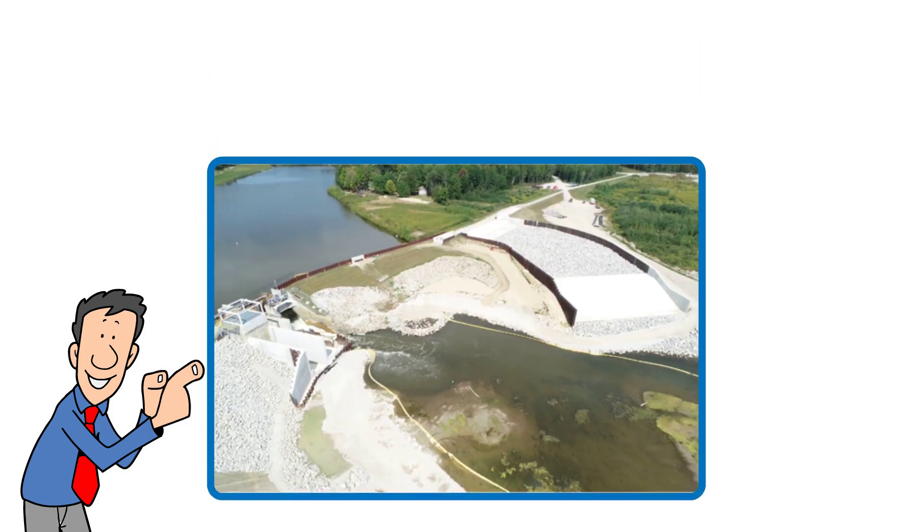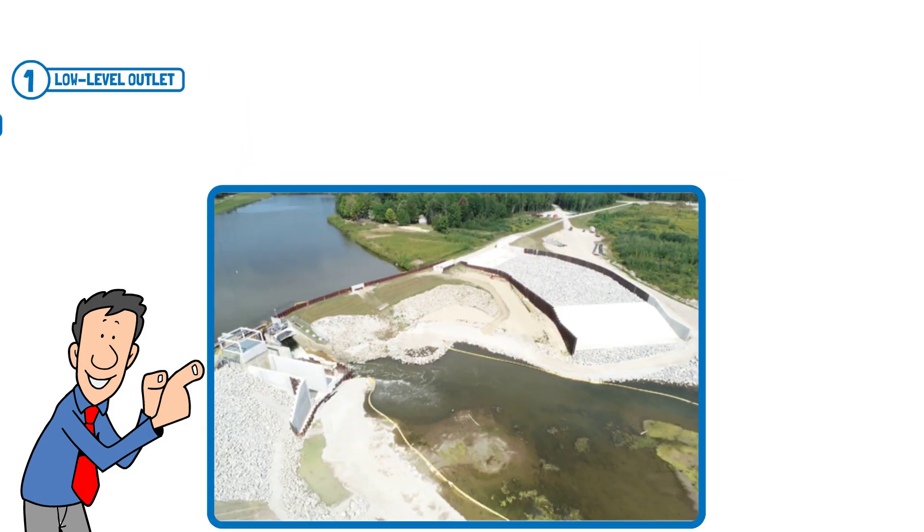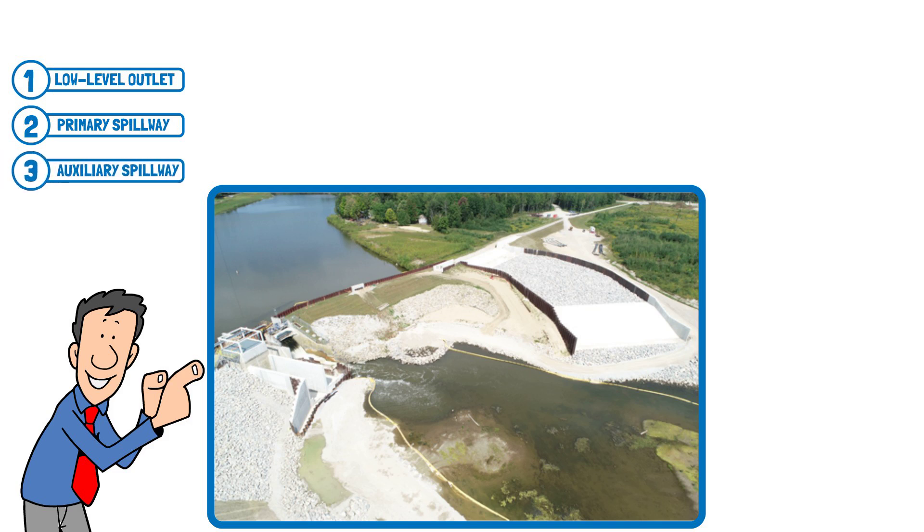There are three types of spillways: a low-level outlet, primary spillway, and auxiliary spillway.